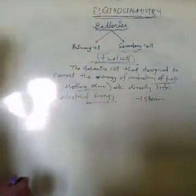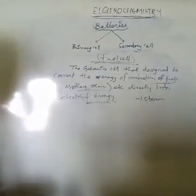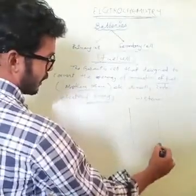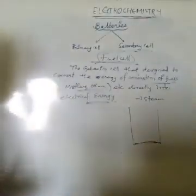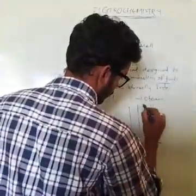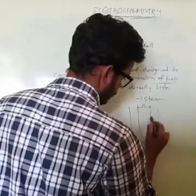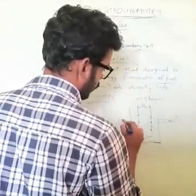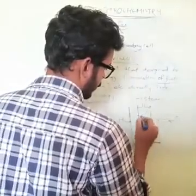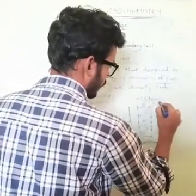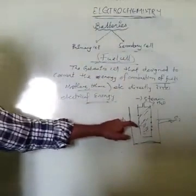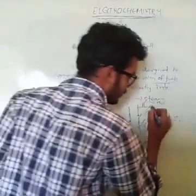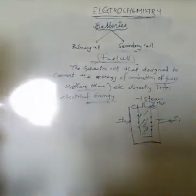Looking at the construction of the fuel cell — it is based on hydrogen and oxygen. There is a cell with porous electrodes. On one side you apply oxygen, on the other side hydrogen. They condense to give H₂O. One side is positive (cathode) and the other is negative (anode).